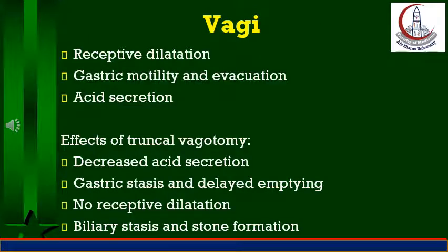Truncal vagotomy is a common procedure in operations for the treatment of intractable peptic ulcers in order to decrease acid secretion and allow for healing of the ulcer. However, it also causes delayed gastric emptying, and vagal denervation of other viscera like the gallbladder increases gallbladder stone formation.